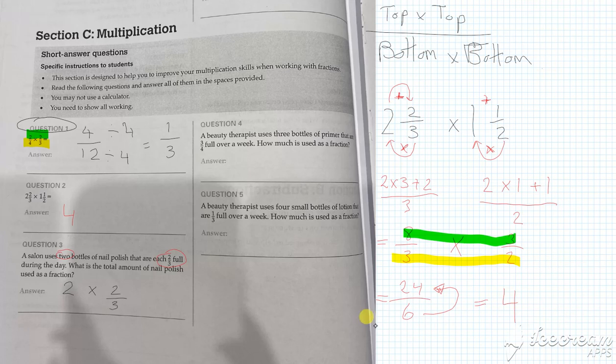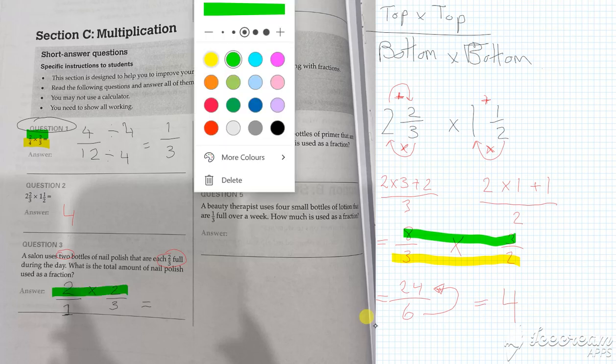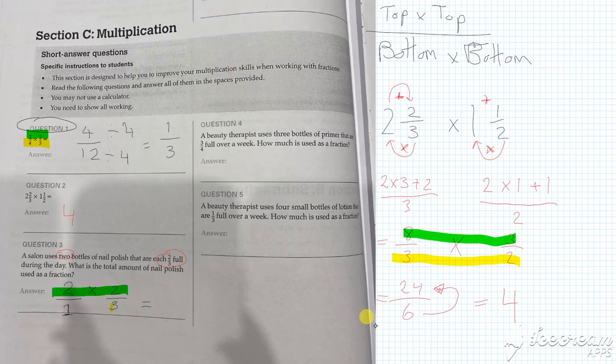Now what you'll notice though is that the whole number doesn't have a bottom. So all whole numbers will have the number 1 on the bottom. Then we're just going to do the same steps across and across. And so I'll see what you get there, just remember to then simplify the bottom into the top.